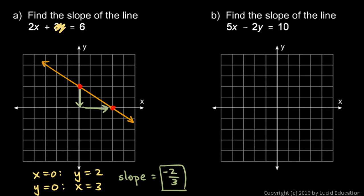In the next example, 5x minus 2y equals 10. Let's do the same thing. We'll start off, let x equals 0. And we're left with negative 2y equals 10. So y has to be negative 5. So that's down here.